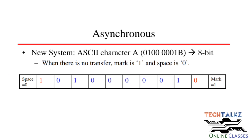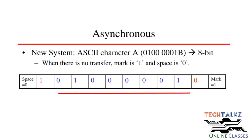When transmission is not happening, the line is at a high value — that is called mark. When we need to send a character, we first provide an active low signal — that is the start bit, which is zero. Then the corresponding 8 bits for the character (D0 to D7) are sent. At the end of the character, there will be a stop bit, which is active high. That is called space.